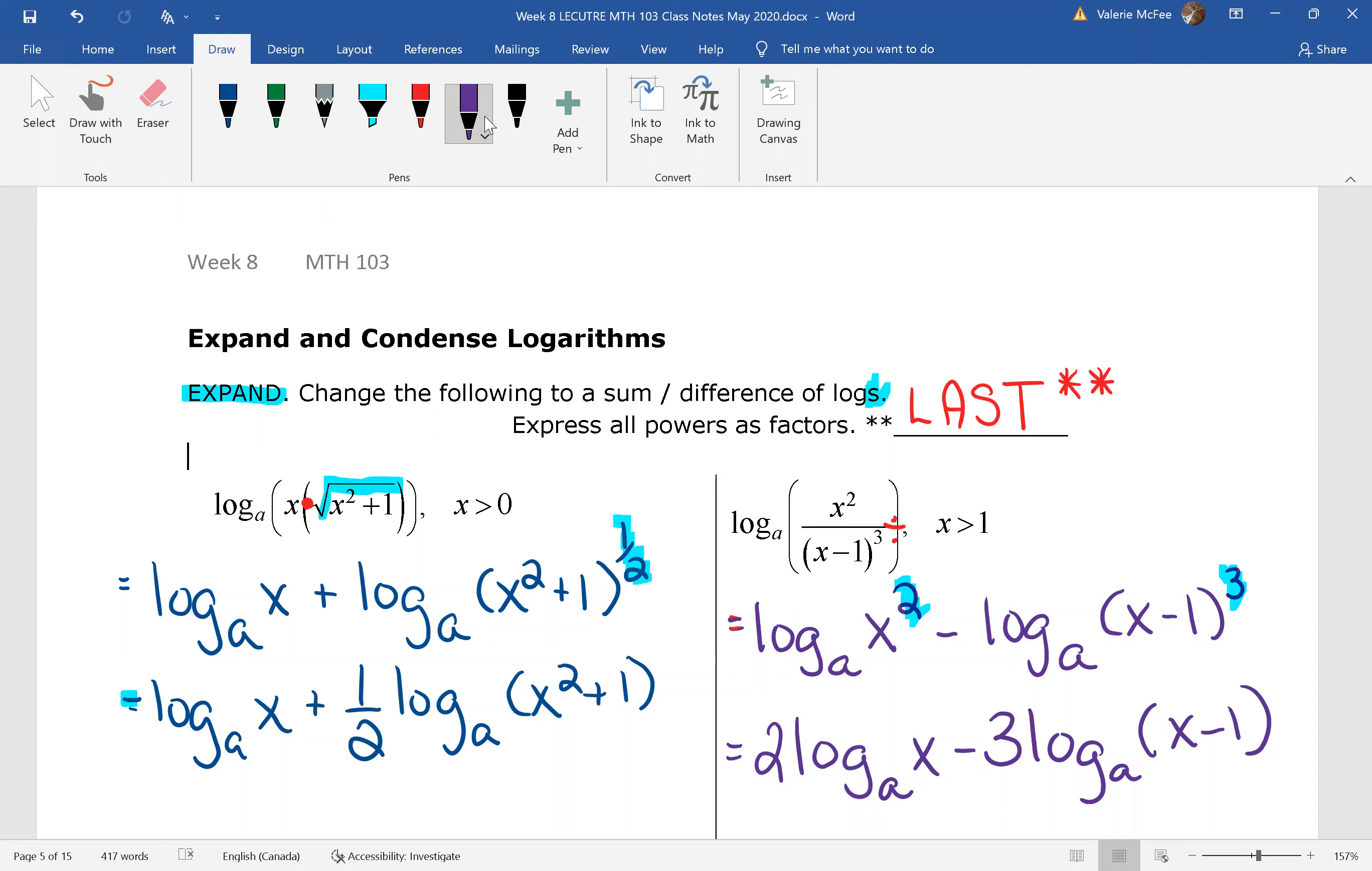Again, there's nothing we can do with that x minus one in the argument. We don't have a property that simplifies or changes subtraction inside a single log.